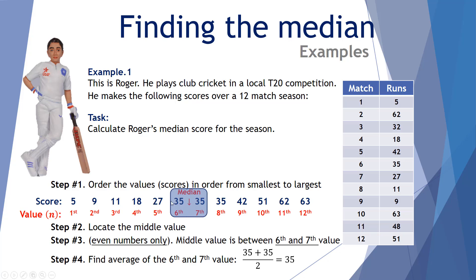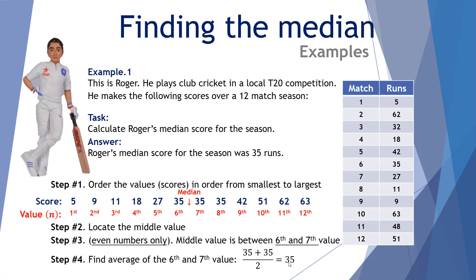The 6th score is 35 and the 7th score is also 35. When we average those, that comes out to 35. We've now discovered Roger's median score for the season was 35 runs.